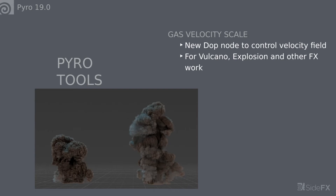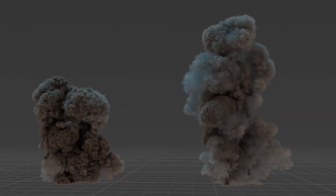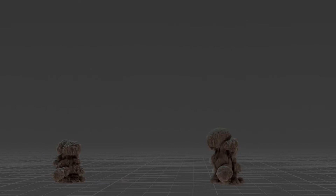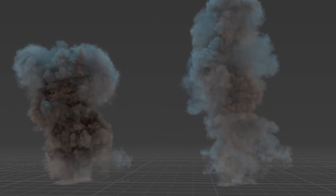One of the new DOP nodes is Gas Velocity Scale, useful for changing the motion of your fluid simulation. It serves two purposes: you can use it to dampen motion — slowing down a fast-moving explosion — but you can also use another field, like the flame field, to inject velocity into the simulation. On the left is the simulation without Gas Velocity Scale; on the right it's applied only in certain areas, making the motion more eruptive. You can also use it to cool down areas where the flame has cooled to a certain value.